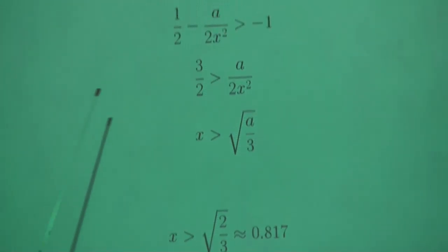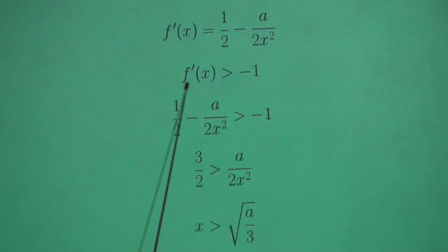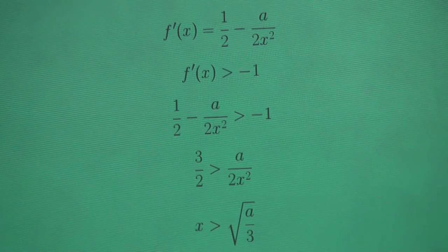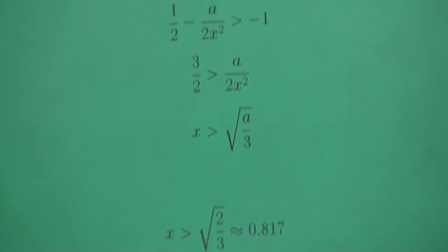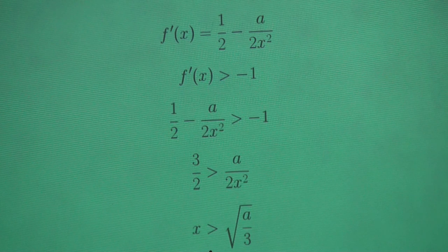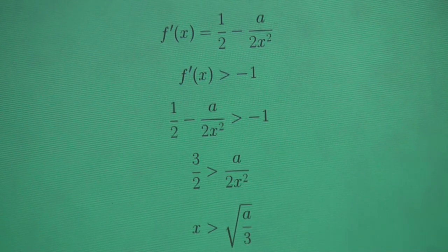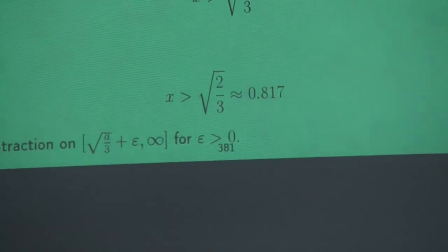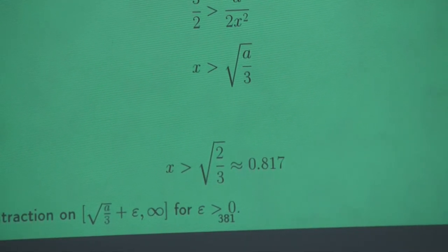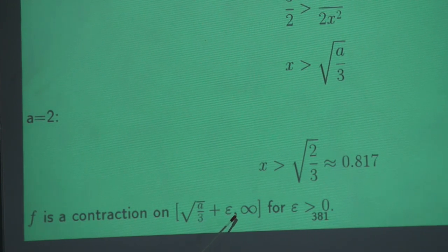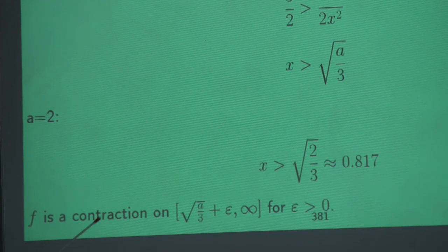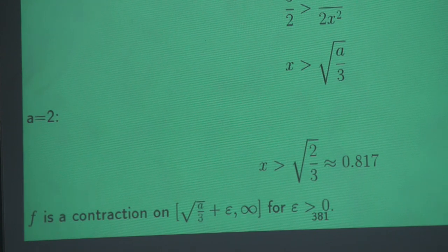The question is how far to the left can we go for the function to be contracting. We look for x such that f prime of x is greater than minus one. Solving this gives x greater than the square root of a over three. For a equal two, we get approximately 0.817. On any interval from slightly above this bound to infinity, f is contracting — so we can do fixed point iteration.